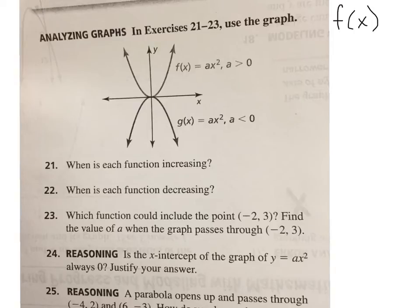So, the vertex is where the graph changes direction. The vertex is where it either goes from increasing to decreasing, or decreasing to increasing. So you can see right here, the vertex is at 0, 0, isn't it? And so, the graph, what's it doing from negative infinity all the way to 0?